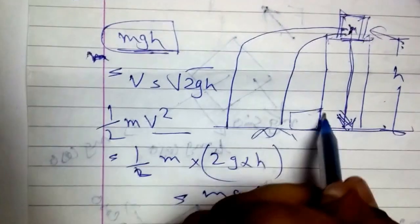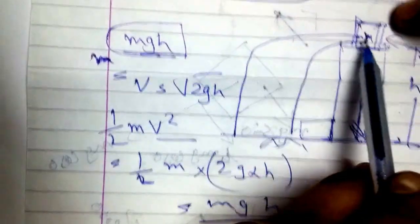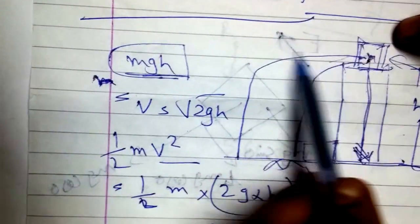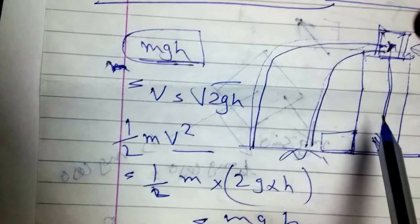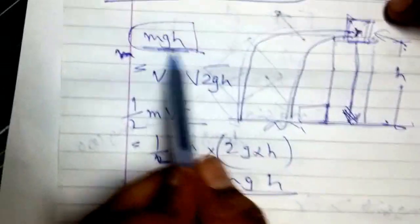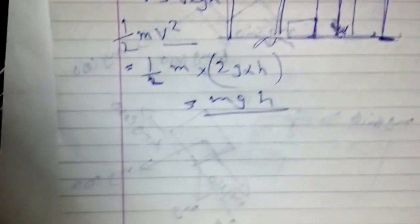So this does not depend on whether the body falls through this trajectory or through this trajectory. What ultimately matters is the change in height of the body, which decides the change in potential energy of the body.